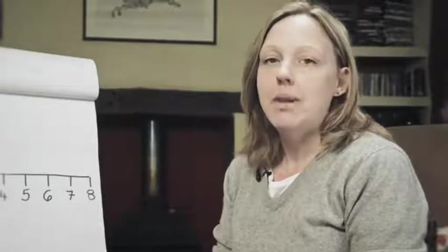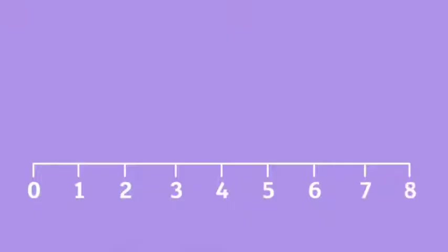one method is to count backwards. We start from eight and we count back five places. One, two, three, four, five, and see where we land, the number three.